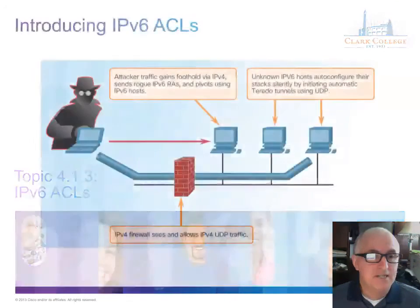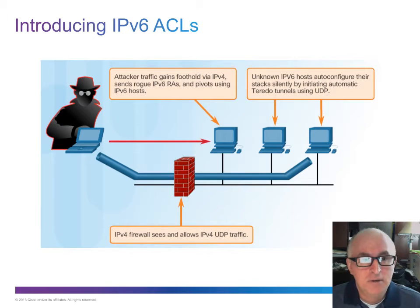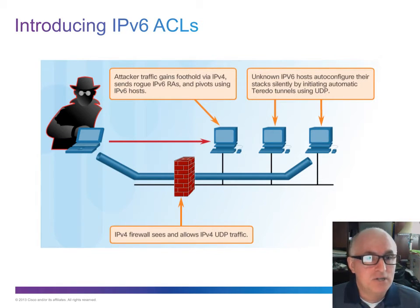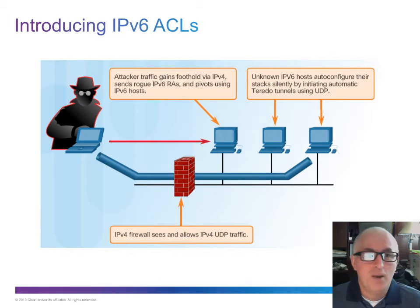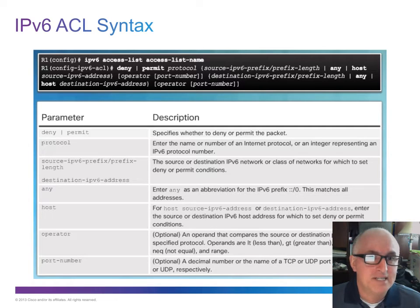Let's talk about IPv6 ACLs. If you have IPv6 addresses, remember the same interface can have both an IPv4 and an IPv6 address. You need two different routing protocols — one for IPv4 traffic and one for IPv6 — and you need two different access control lists, one to filter IPv4 and one to filter IPv6. You'd essentially need two different firewalls. Remember, IPv6 only supports extended named ACLs.